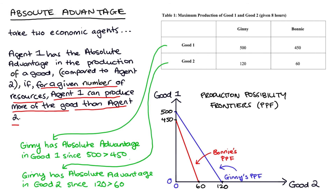Bonnie's PPF — the red line — can be constructed and interpreted in a similar way. Bonnie's vertical axis intercept is 450, which is how much of good one she can make at most if she makes none of good two. Her horizontal axis intercept is 60 — the maximum she can make if she makes zero good one and spends all of her eight hours making good two. It follows from this that if we want to see absolute advantage, we just look at the axis intercepts and see which is larger.